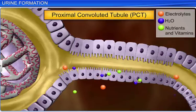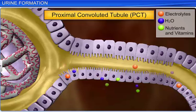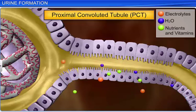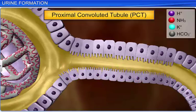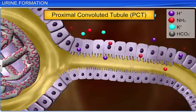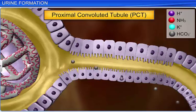The proximal convoluted tubule reabsorbs about 70-80% of the electrolytes and water, and almost all the essential nutrients and vitamins. It also selectively secretes ammonia, hydrogen ions, and potassium ions into the filtrate, and absorbs bicarbonate to maintain the pH and ionic balance of body fluids.